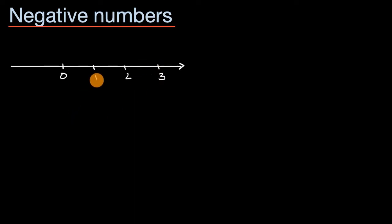And you can think of these numbers, which you're used to, which we could call positive numbers, is how far we are above zero. One is one above zero, two is two above zero.